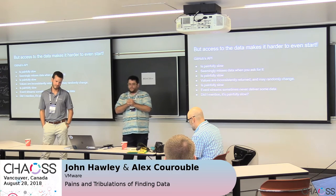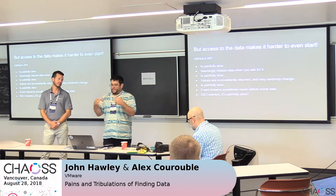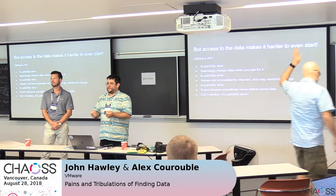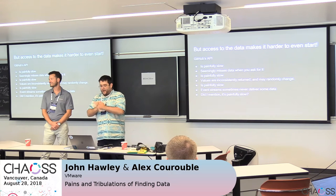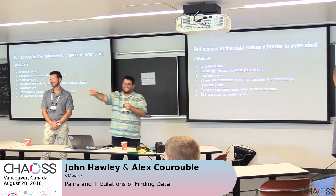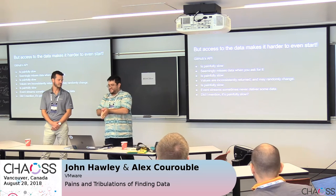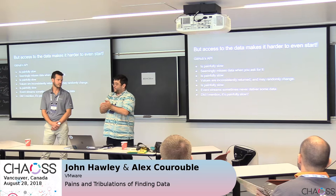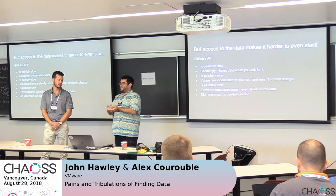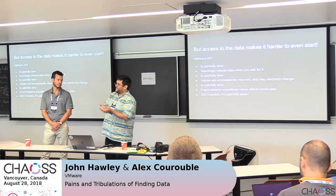We looked at a bunch of different projects that are already pulling data and trying to process it, but they all come back to fundamentally GitHub's API. How many people in this room have actually queried GitHub's API directly? About half the room. How many of you have figured out that it's really, really slow? You can only ask a question of the GitHub API once a second, which means you can only ask 3,600 questions per hour.